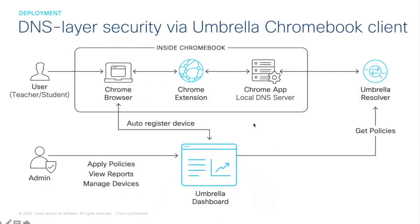For Chromebook devices, we have the Umbrella Chromebook Client, which provides DNS layer protection on and off network. We see this widely used by education customers, especially K through 12. It helps protect against phishing, lets you enforce content category filtering for the Children's Internet Protection Act, and provides policy-based protection wherever the user goes. It also provides a way to identify which user sent the DNS request and gives you granular control and visibility for all activity happening with your Chromebook users.